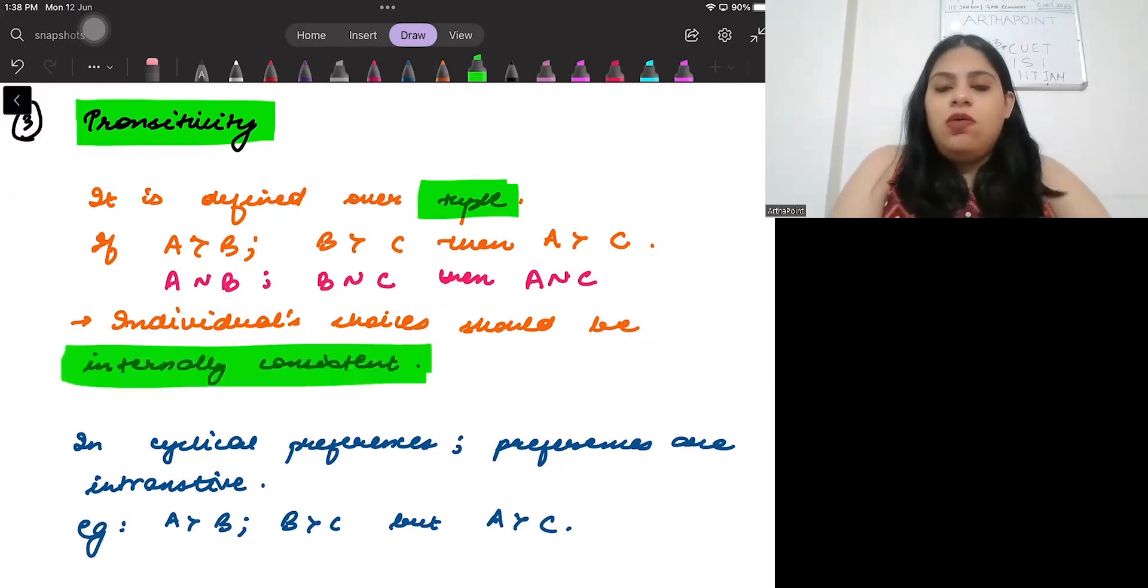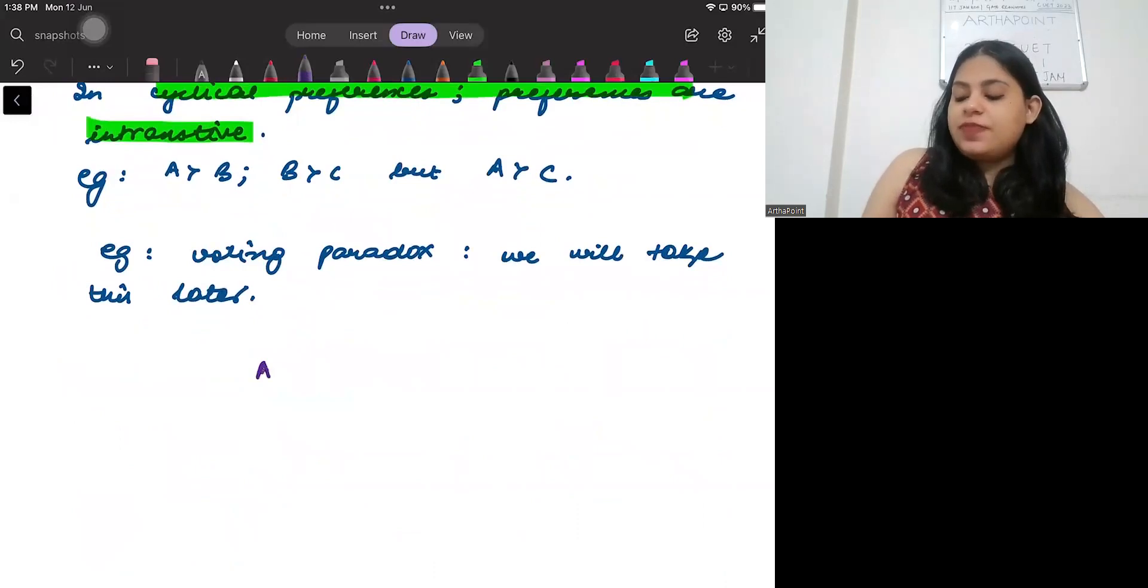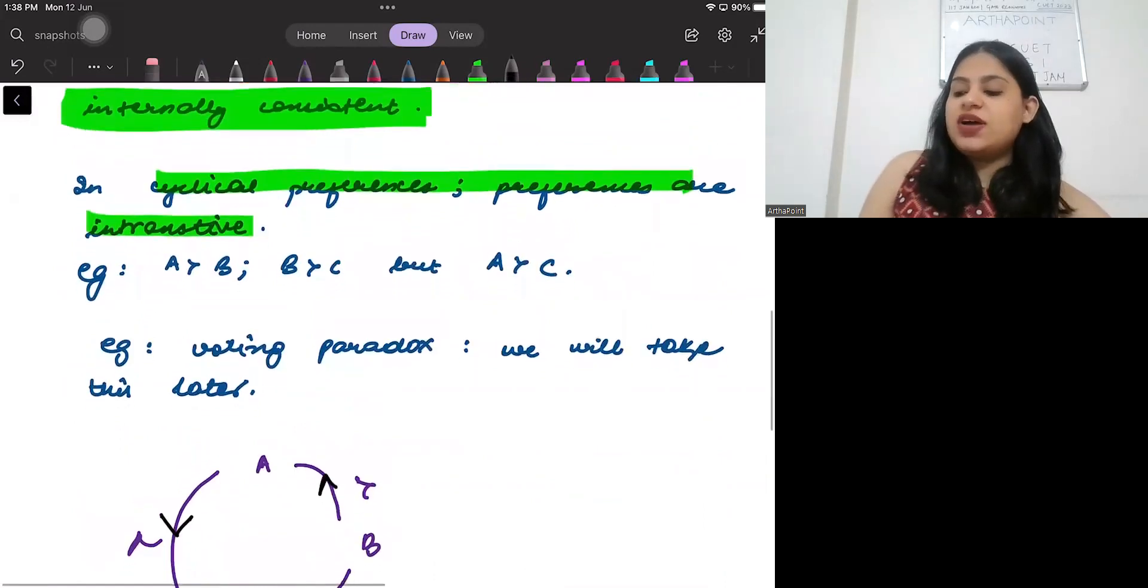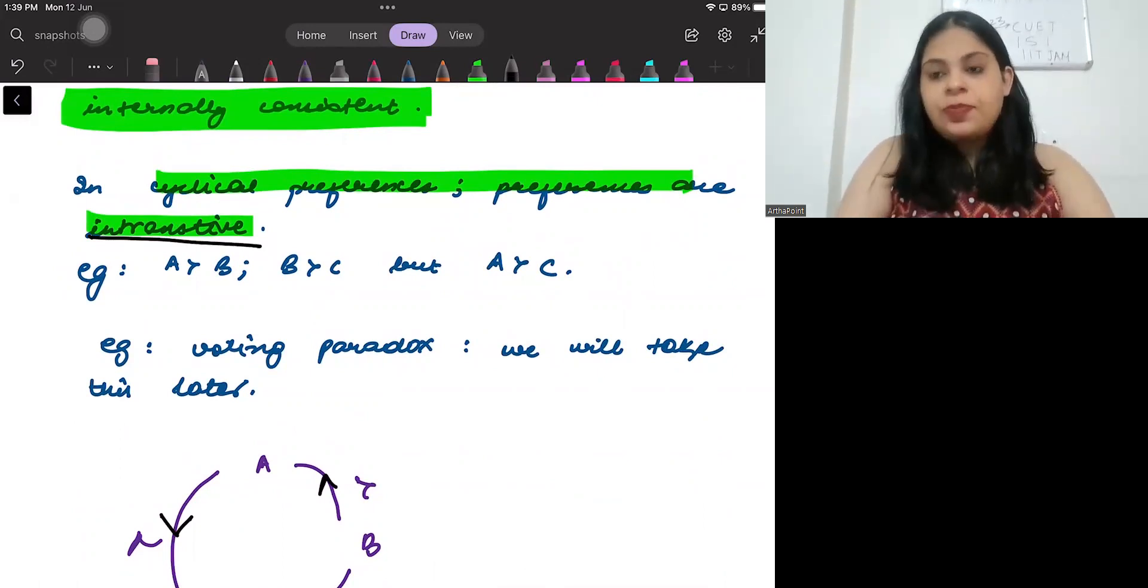Now, when I talk about cyclical preferences, these preferences are intransitive preferences. Cyclical preferences is what happens? A is preferred over B, B is preferred over C, and C is preferred over A. So when you have this cycle that A is preferred over B, B over C, but C over A, these are called cyclical preferences. In this case, transitivity is not followed. It is intransitive. Another example which we will take later on is called voting paradox. Even during voting, we see that the preferences may become intransitive. I hope this is making sense to you. So these were the axioms of rationality. Thank you.